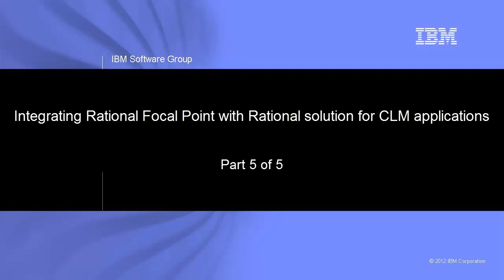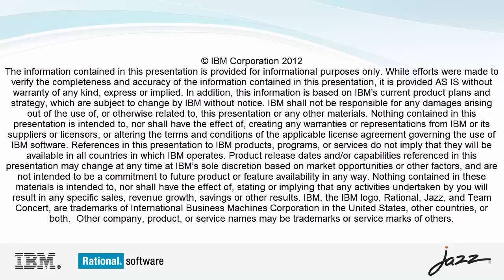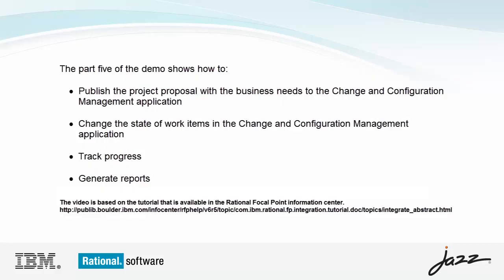In this demonstration, we continue to manage the Rational Focal Point business needs with the CLM applications and generate the traceability reports. In the fifth part of this demonstration series, we show how to publish the project proposal with the business needs from Rational Focal Point to the change in configuration management system as a project with work items. We also show how to change the state of the work items in the change in configuration management application, track the work item state from Rational Focal Point, and generate the traceability report for the business needs.